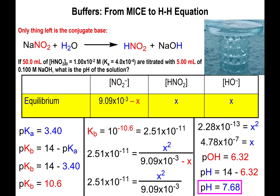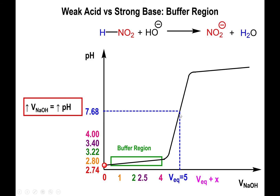A clue that you may have forgotten this step: when titrating a weak acid with a strong base, the pH at the equivalence point must be greater than 7. If you took the negative log of x and got a value less than 7, that tells you to subtract from 14 because you are dealing with pOH, not pH. Applying that correction confirms the pH is indeed greater than 7.